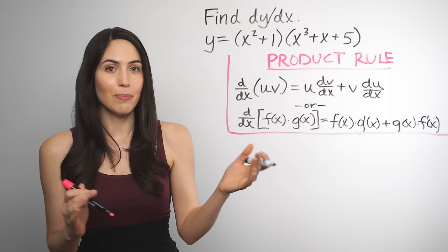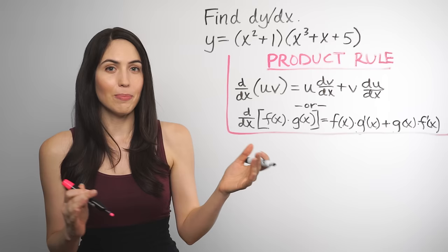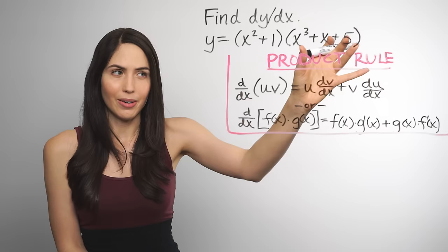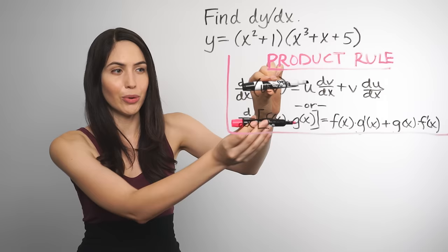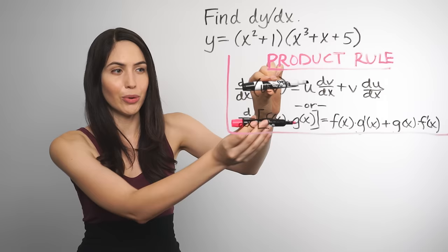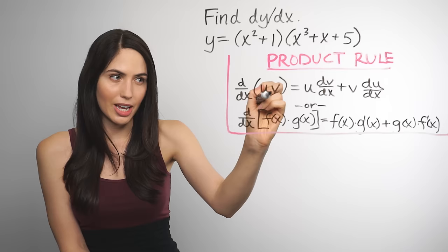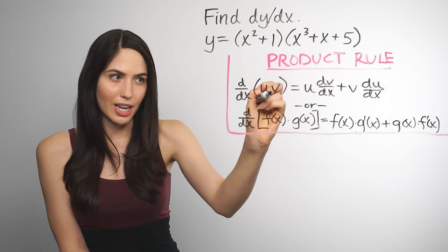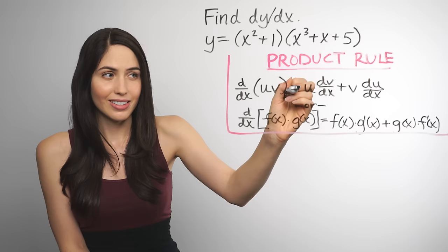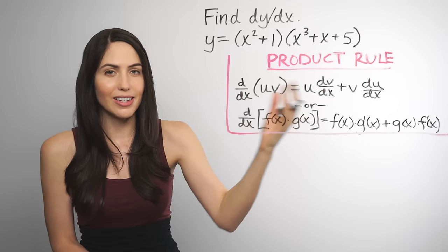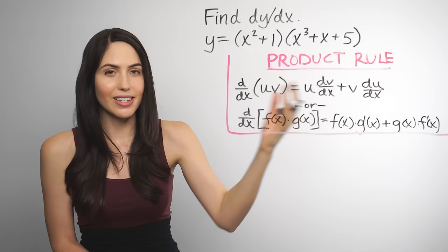So say your equation is not just a polynomial, but is one factor multiplied by another. If your equation has the overall form of one thing multiplied by another, you're going to want to use the product rule. The product rule — and I've given you two forms of it, they mean the same thing, just different notation — says that to take the derivative of two functions multiplied together, u times v, you have the first function as is, times the derivative of the second function, plus the second function as is, times the derivative of the first function. So let's try it for our equation.